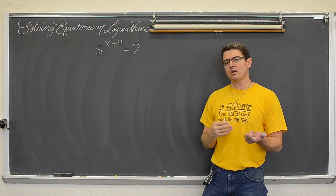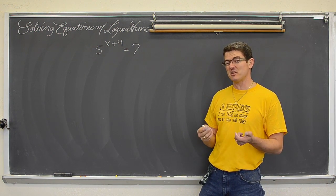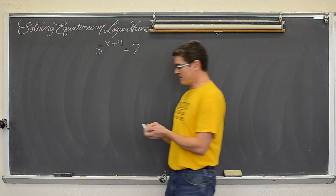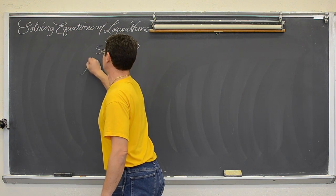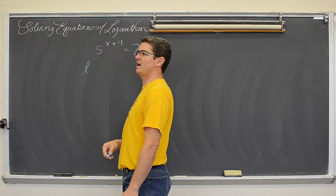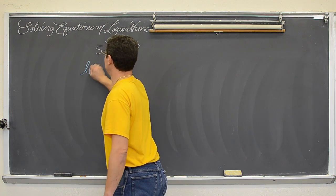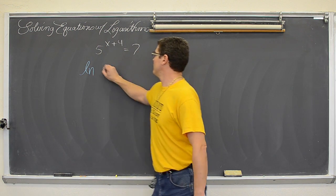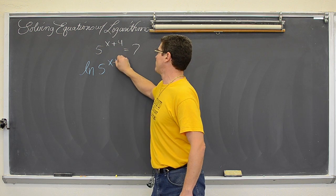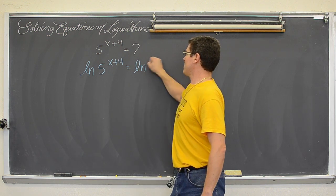You are still going to have to write pretty much just as much. We are going to take the natural log of 5 to the x plus 4 equals natural log of 7.